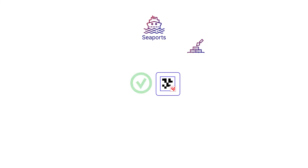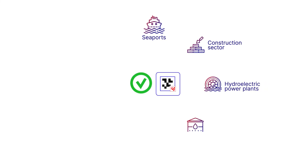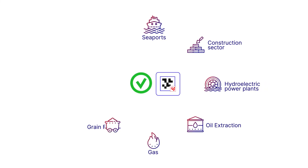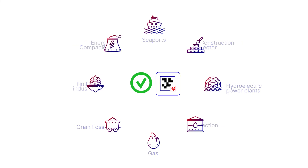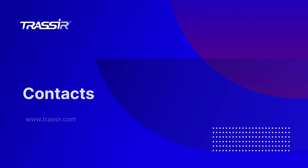Accounting and quick search of objects in the archive or in real time can be applied in many sectors of the economy. Introducing the Aruko module makes it possible to reduce inventory accounting errors, as well as labour costs when calculating inventory balances.